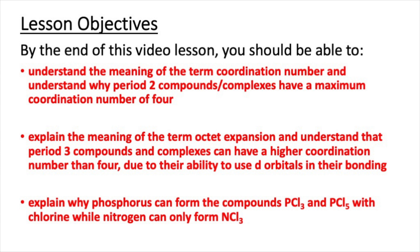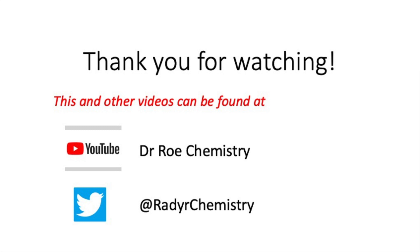That concludes this video lesson. After watching this video, you should now understand the meaning of the term coordination number and why period 2 compounds have a maximum coordination number of 4. You should be able to explain octet expansion and understand that period 3 compounds can have higher coordination numbers due to their use of d-orbitals. Finally, you should be able to explain why phosphorus can form PCl3 and PCl5 while nitrogen can only form NCl3. Please check out our YouTube channel, Dr. Rho Chemistry, which has lots of GCSE, AS and A-level videos, and our Twitter site at Radachemistry.